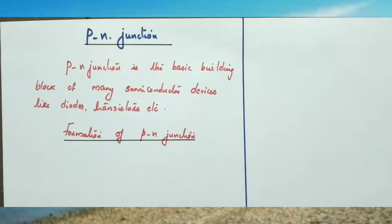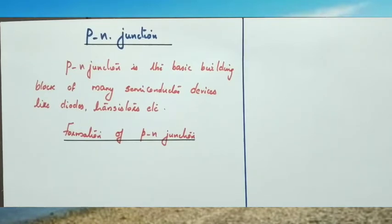We know diode, transistor, photodiode, solar cell, LED, etc. — they are all made up of a basic block called the PN Junction.